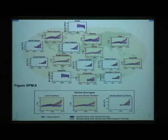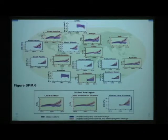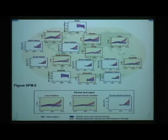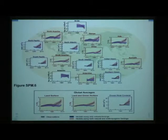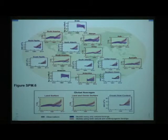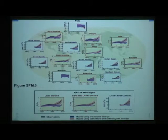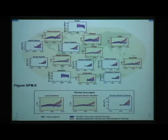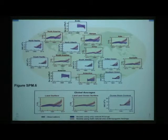The key point here is that in each of these plots, the black is the observations, the pink is with the anthropogenic carbon dioxide and methane, and the blue is with only the natural forcings. After 1950 to 1960, the only way you can match the actual observations is if we include the CO2, the anthropogenic greenhouse gases, in the model. And that's consistent among all these areas, and globally it's even more obvious.